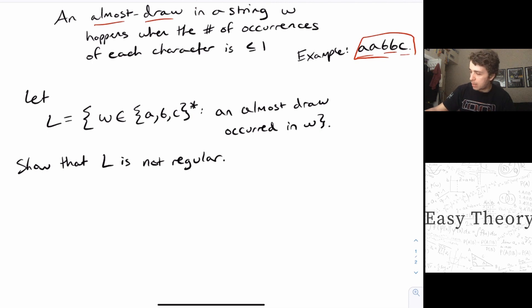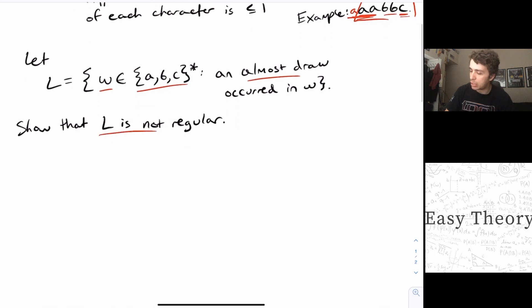So here if we have for example three A's, two B's, and one C, then that is not an almost draw because the number of A's is three, the number of C's is one, the difference is two. So the language that we're looking at is the set of all strings in A, B, C star such that an almost draw occurred. And what we want to show is that this language is not regular.